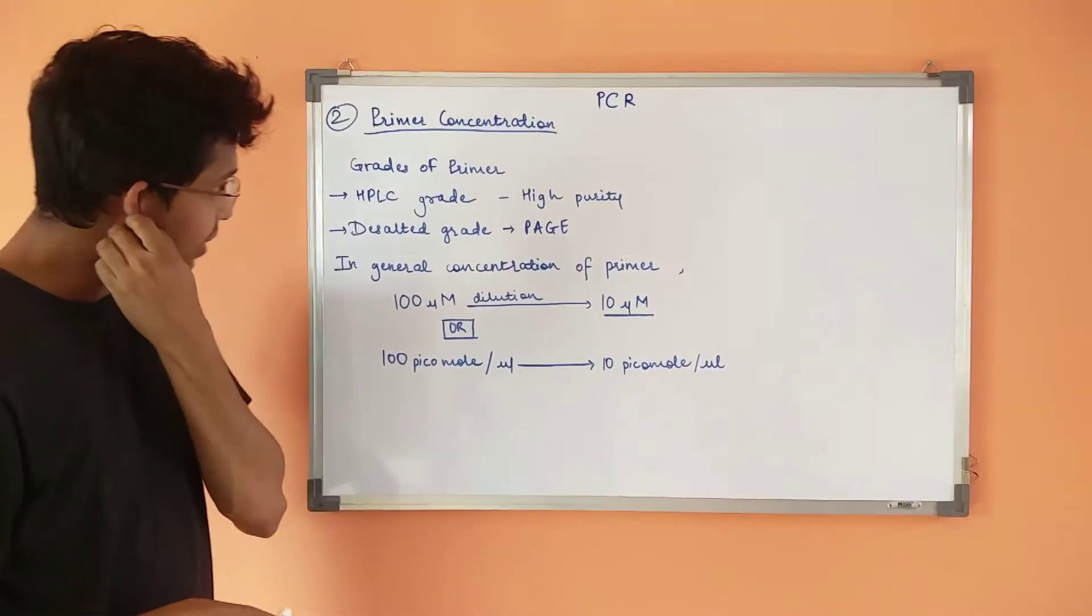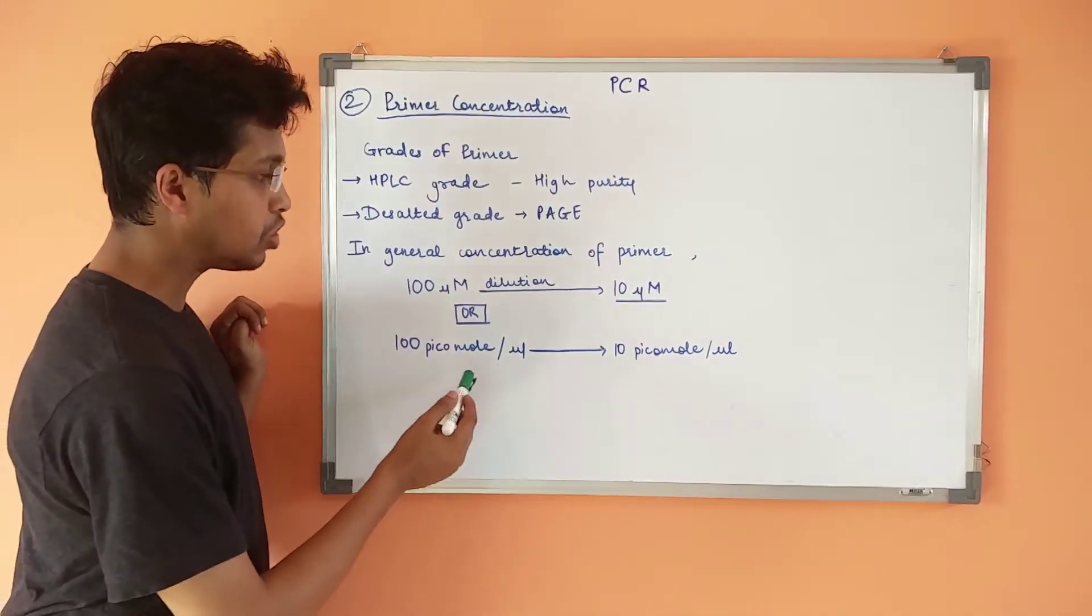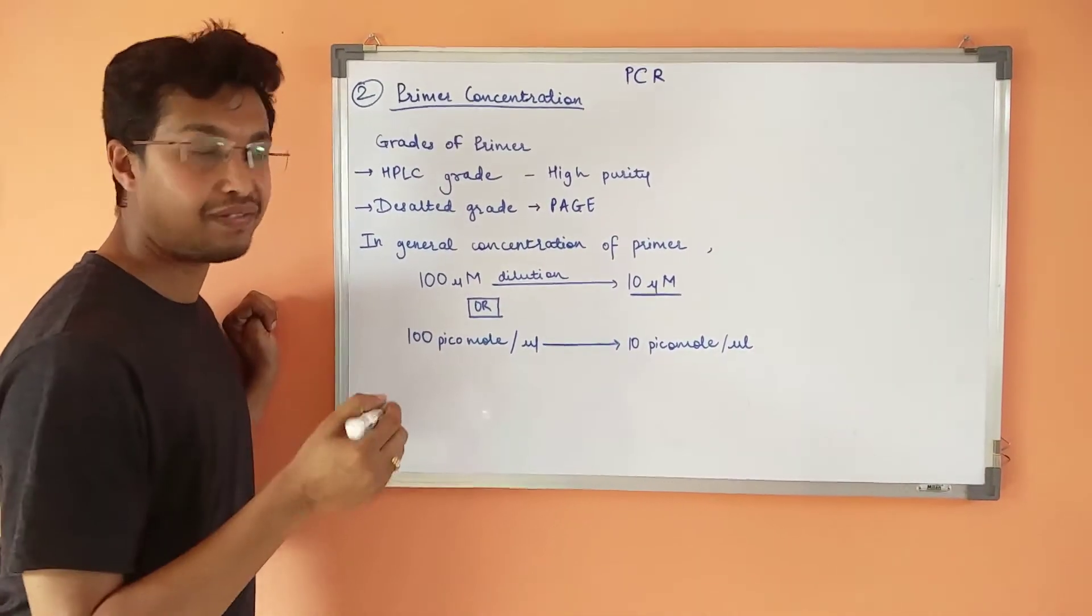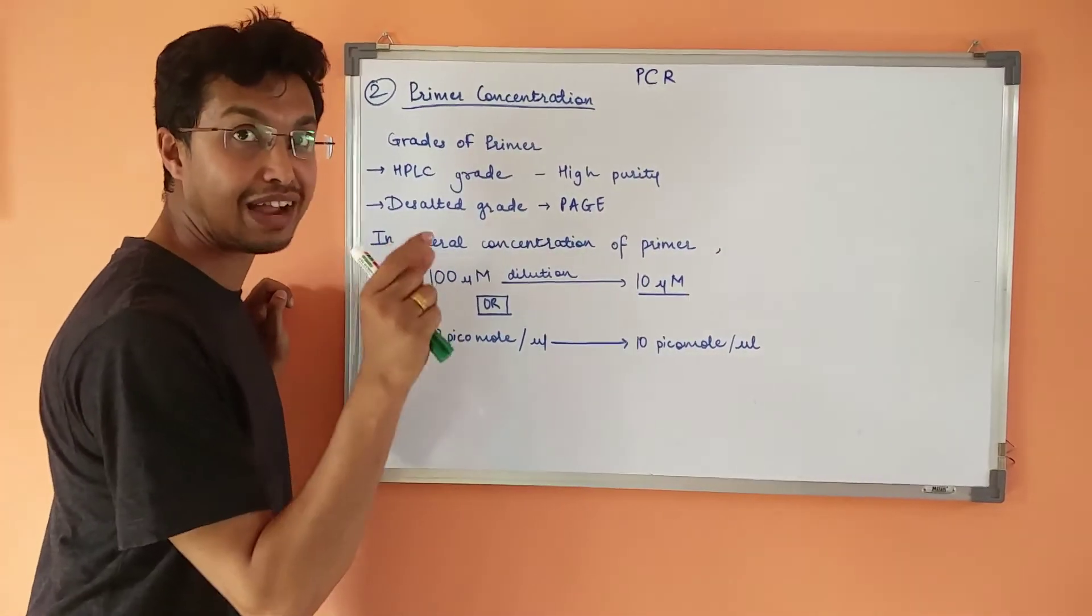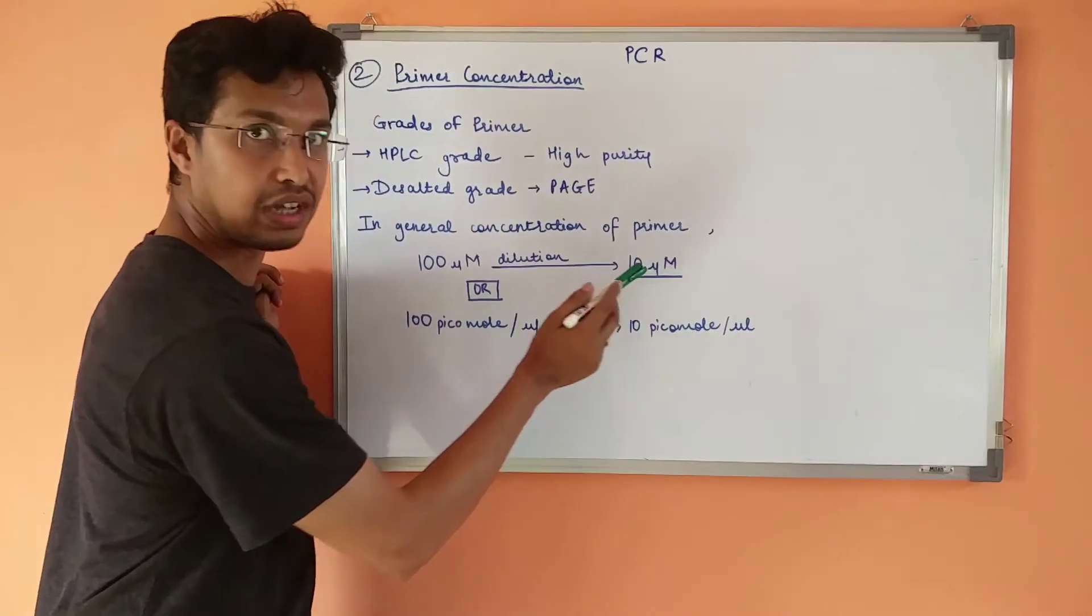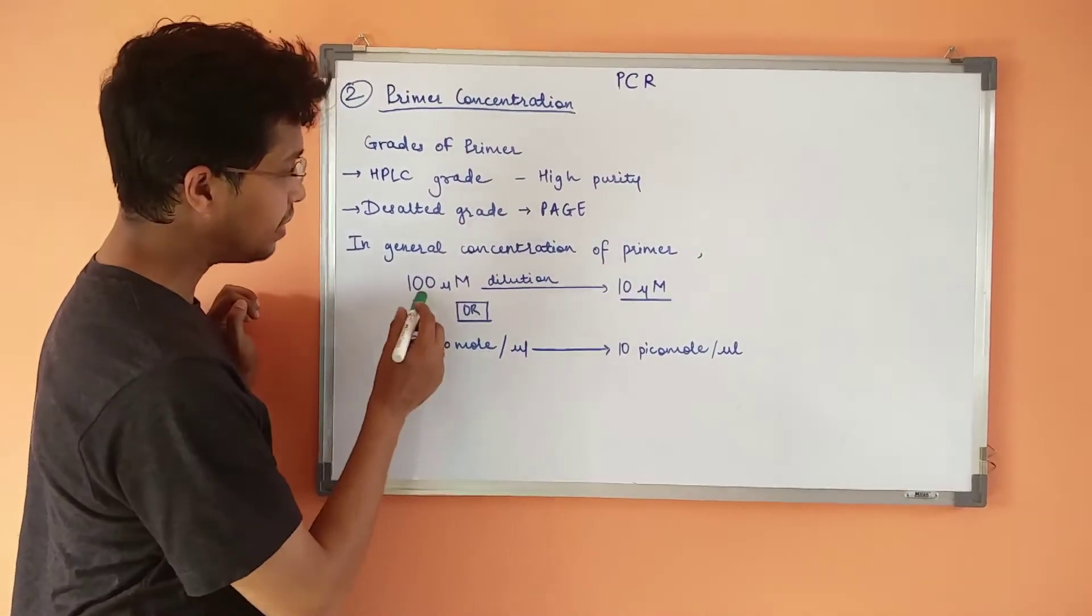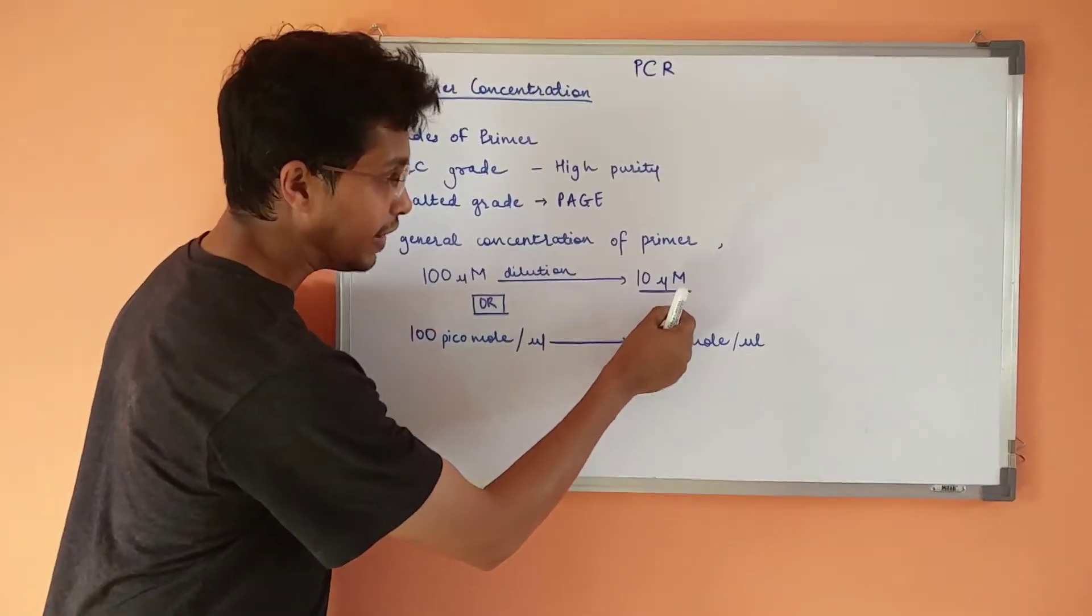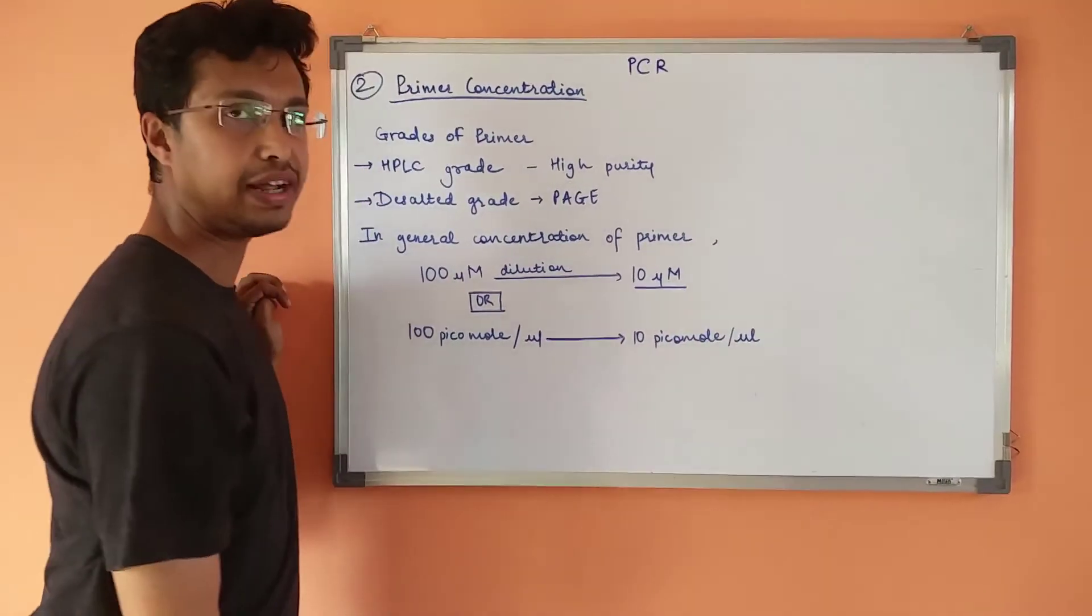In general, the concentration of PCR primer is 100 micromolar or 100 picomol per microliter. What has been told in that particular sheet which we get when we order a PCR primer, you will have to dilute it with the exact volume mentioned over there. For example, if your initial concentration of desalted PCR is 100 micromolar or 100 picomol per microliter, when you dilute it with the exact volume mentioned, it will get diluted to a 10 micromolar concentration, which is also called 10 picomol per microliter concentration.